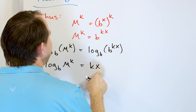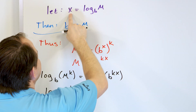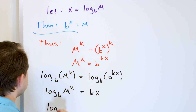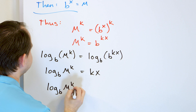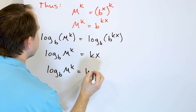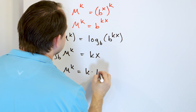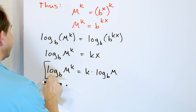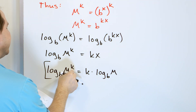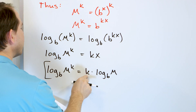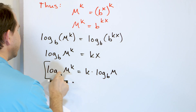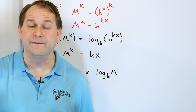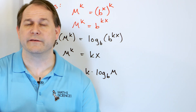On the left I have log base b of m to the power of k, and on the right I have k times x. But x was defined as log base b of m. So log base b of m to the k equals k times log base b of m. You can take the logarithm of something with an exponent and just bring that exponent out front. That completes the proof of the power rule.